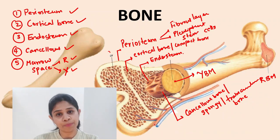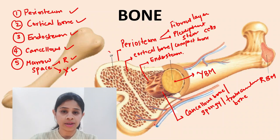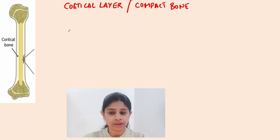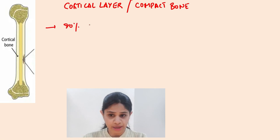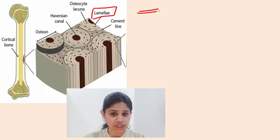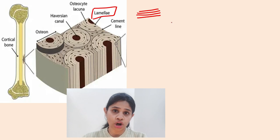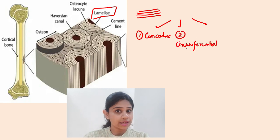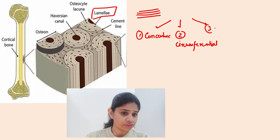Let's now briefly discuss the role and importance of the cortical bone and the cancellous bone. The cortical layer, also called compact bone, is very hard and rigid and makes about 80 percent of the skeletal mass. Its structure is made up of sheets of collagen fibers called lamellae. There are broadly three types of lamellae in cortical bone: concentric lamellae, circumferential lamellae, and interstitial lamellae.